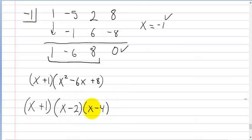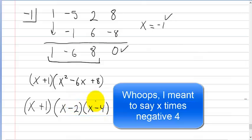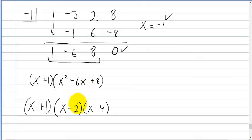So x times x is going to give me the x². Then -2 times x is going to be -2x. And then -4x times x plus the -2x is going to give me the -6x. And then just -2 times -4 is going to give you the 8. So we have gone ahead and factored this out.